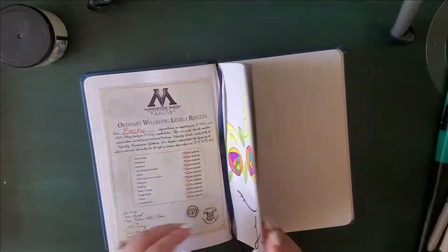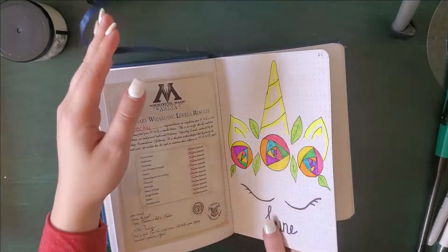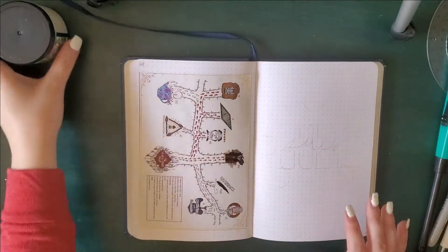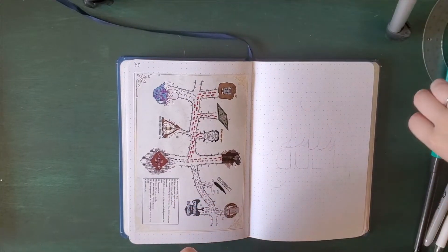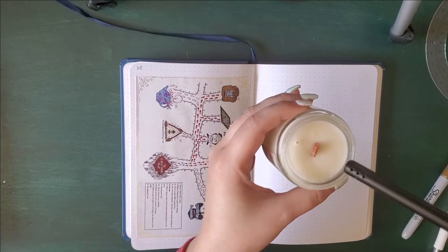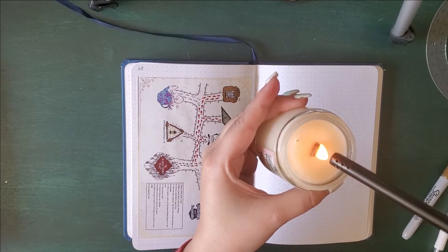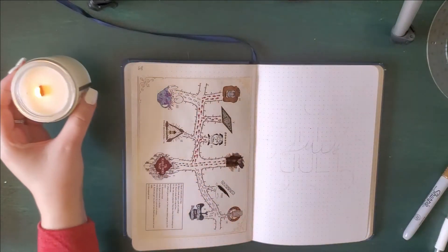For July I decided to go with a space theme, moons, stars, that kind of thing. I really like how it turned out and I really like how I write out July. I decided to do that same kind of style in other places in the bullet journal and I think it's a new favorite that will probably come up a lot more in the future. So let's just go ahead and jump right in starting with my title page.